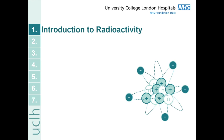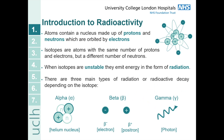So let's start with an introduction to radioactivity. Atoms contain a nucleus which is made up of both protons and neutrons and these are then orbited by electrons. Isotopes are defined as atoms with the same number of protons and electrons but different numbers of neutrons, and when isotopes are unstable they emit energy in the form of radiation. There are three main types of radioactive decay: alpha radiation which is essentially a helium nucleus, beta radiation which comes in two forms — beta minus as an electron or beta plus as a positron — and finally gamma radiation which is a photon.